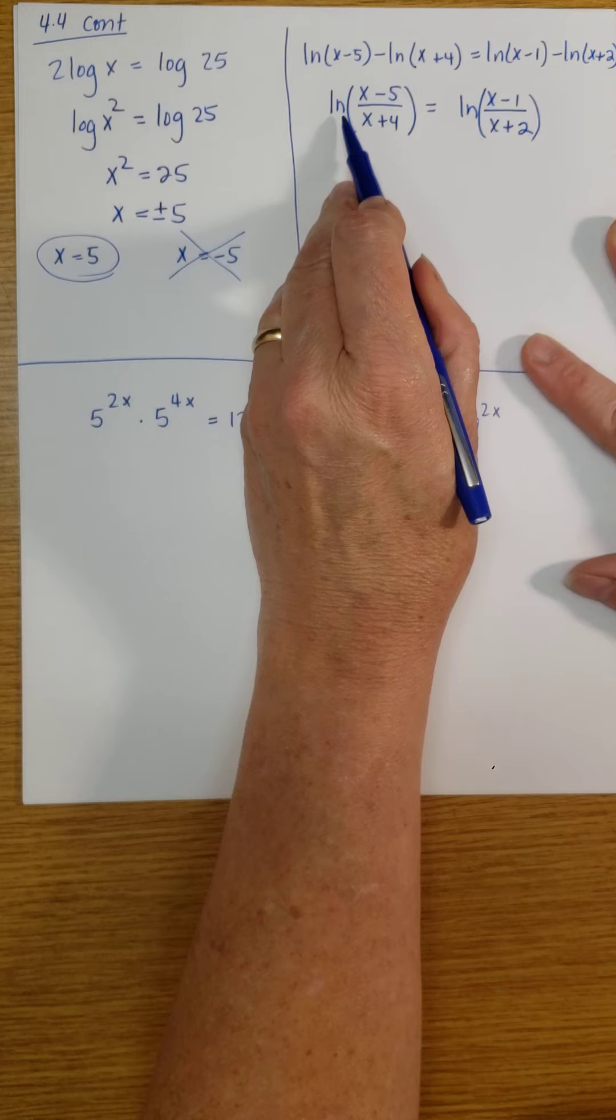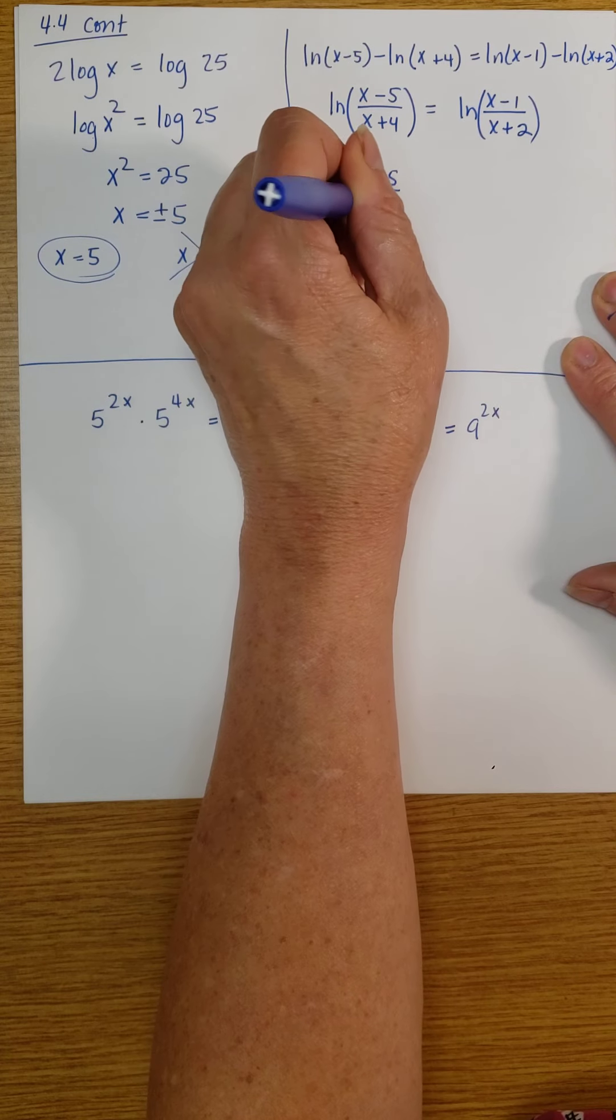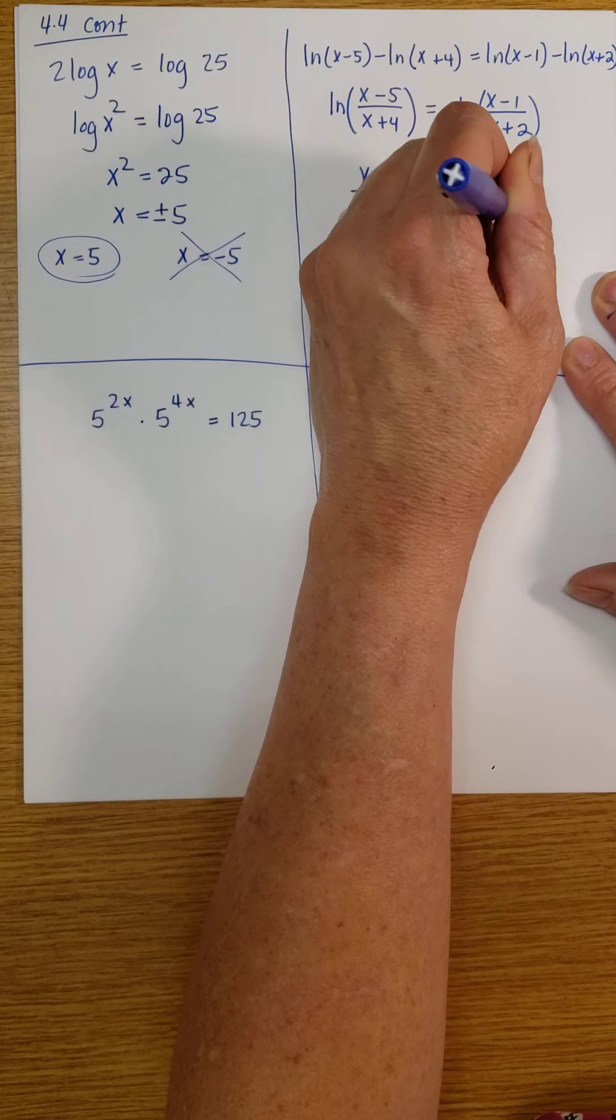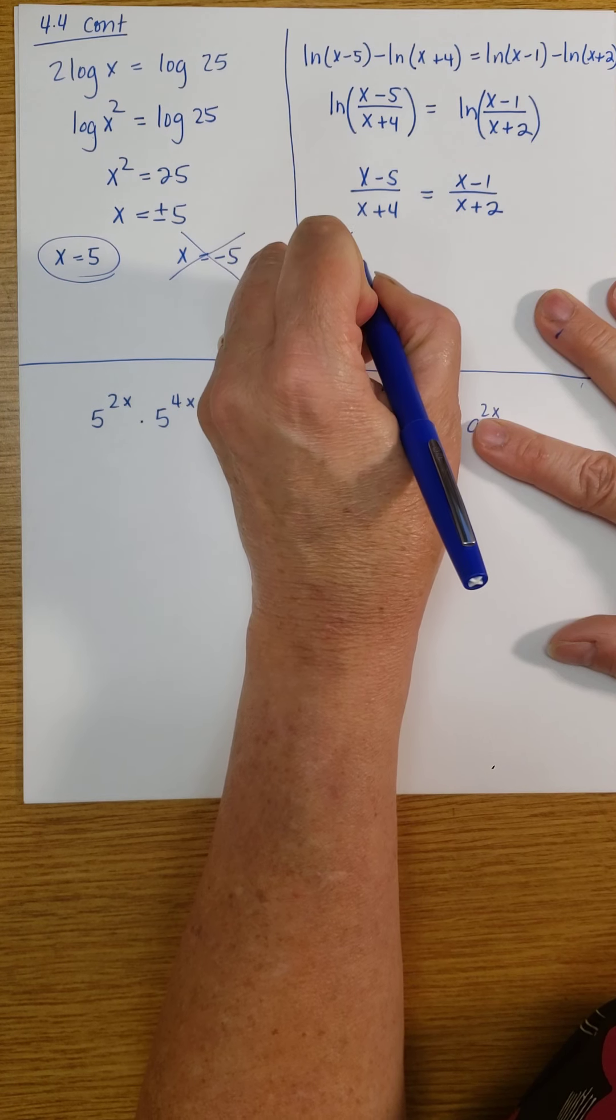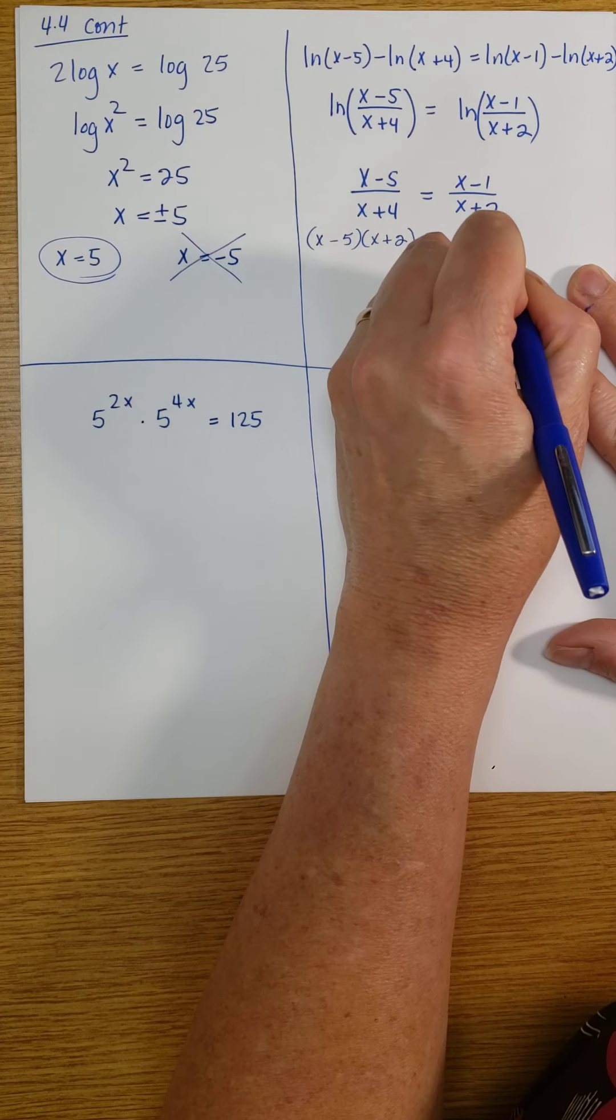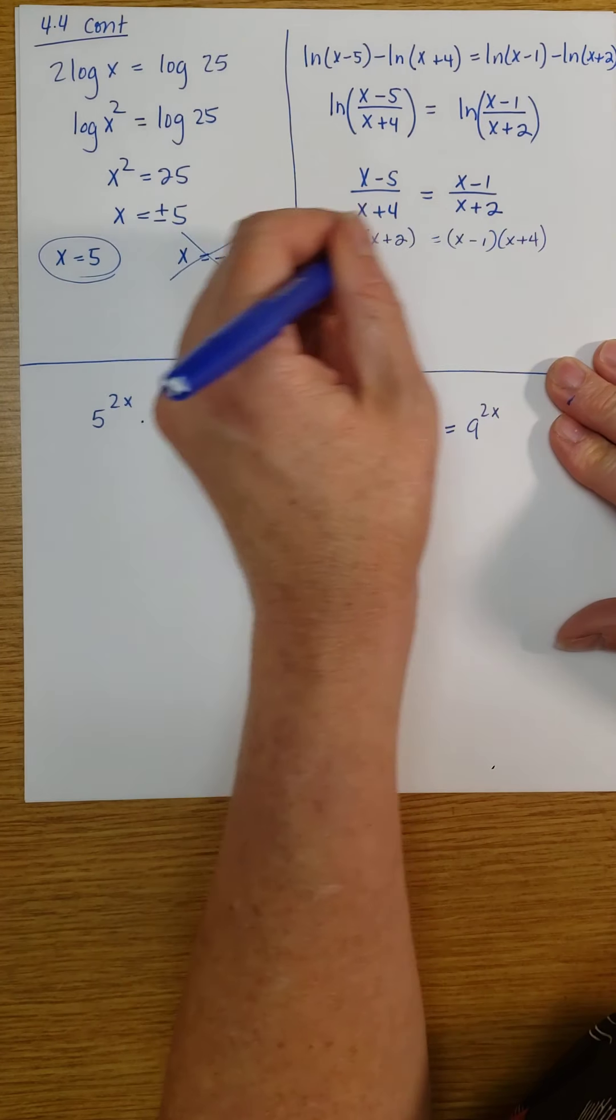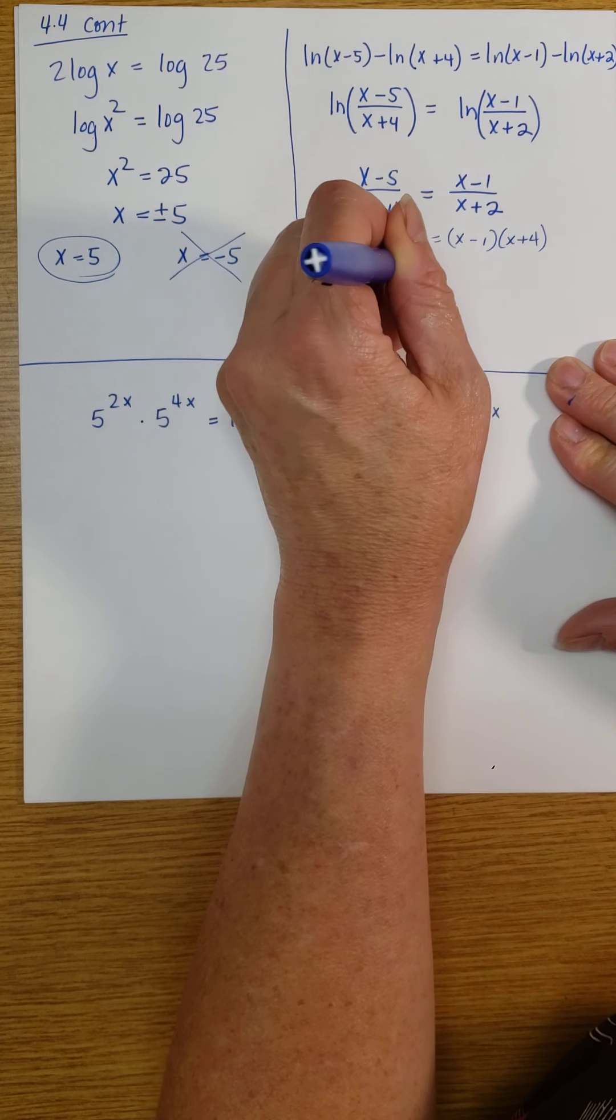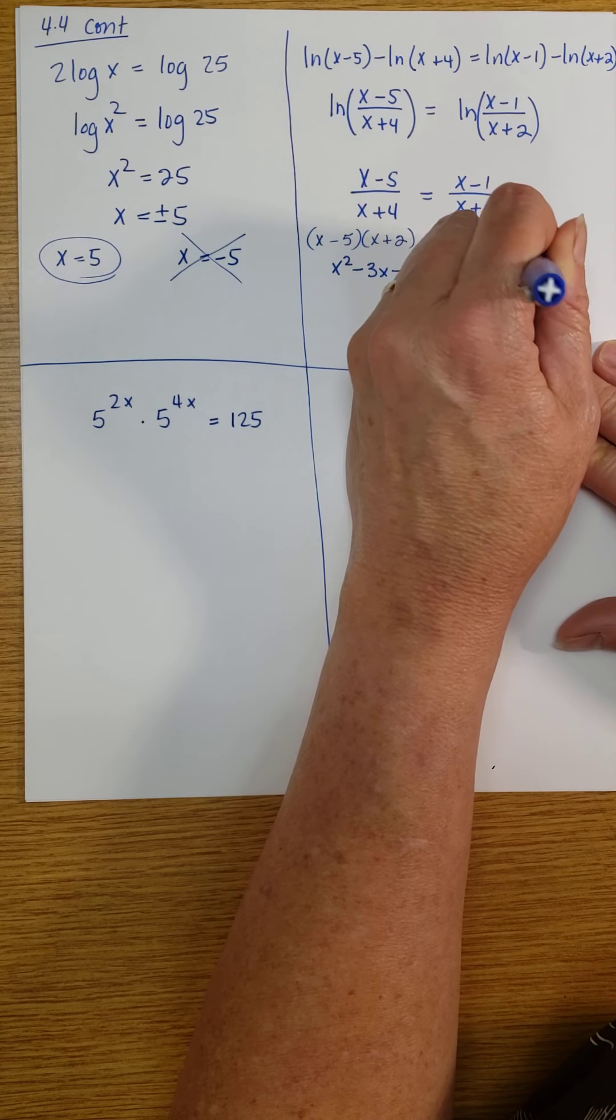I'm going to get the natural log of x minus 1 divided by x plus 2. Now both sides have the natural log function, so I can just assume that x minus 5 over x plus 4 is equal to x minus 1 over x plus 2. And I'm going to cross multiply, so that gives me x minus 5 times x plus 2 equals x minus 1 times x plus 4. And I'm going to go ahead and distribute. We're using the FOIL method. So I get x squared minus 3x minus 10 equals x squared plus 3x minus 4.